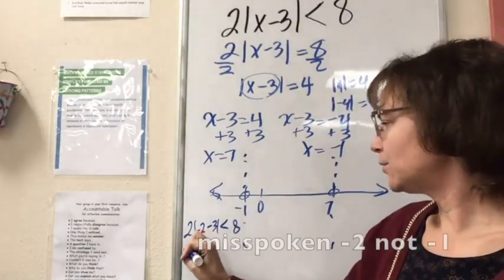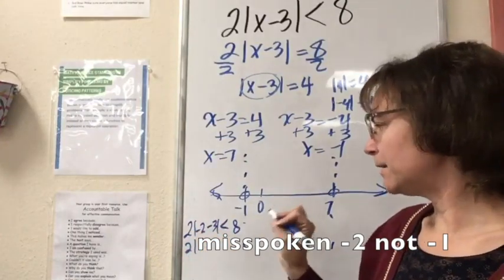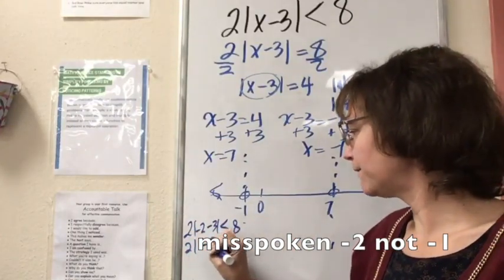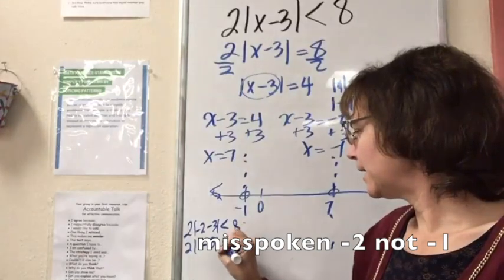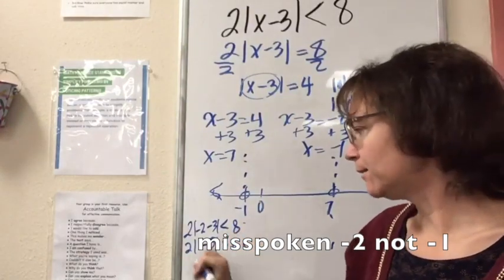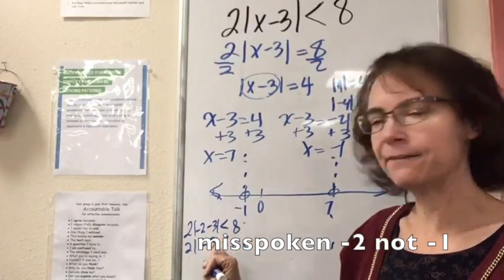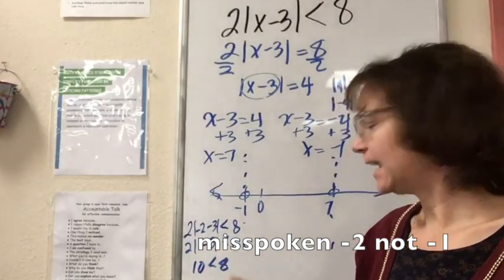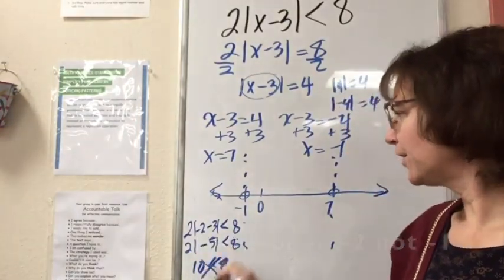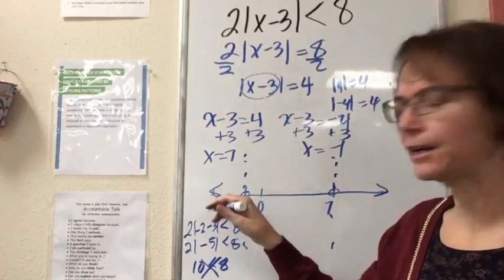So 2 times the absolute value of negative 5. The absolute value of negative 5 is 5, so I have 2(5) = 10 is less than 8. That is false. So this is not true over here.